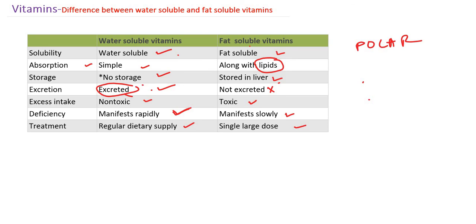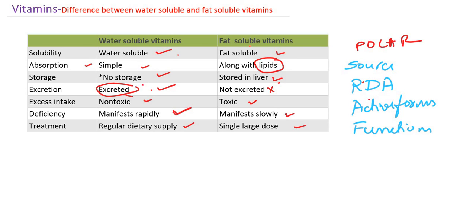These are the important differences between water-soluble vitamins and fat-soluble vitamins. In the coming classes, we are going to study individual vitamins — covering sources, recommended dietary allowances, daily requirements, active forms (also called coenzyme forms for water-soluble vitamins), functions, and deficiency disorders. Thanks for watching.